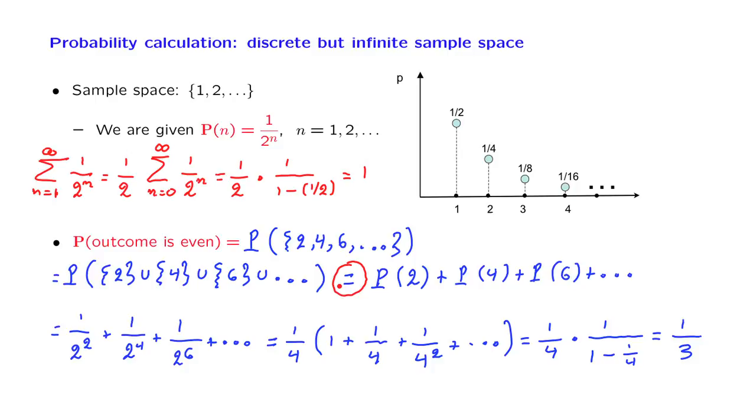Our initial axiom talked about a disjoint union of two subsets, and then later on we established a similar property for a disjoint union of finitely many subsets. But here we're talking about the union of infinitely many subsets.